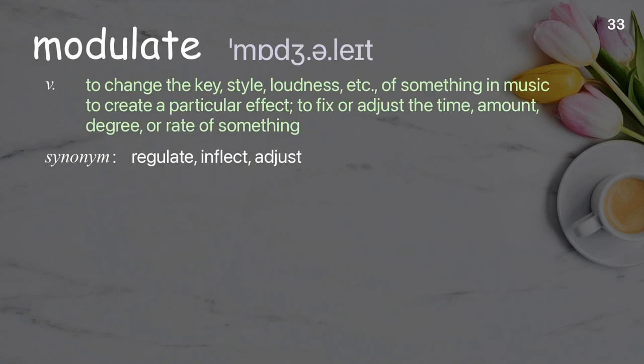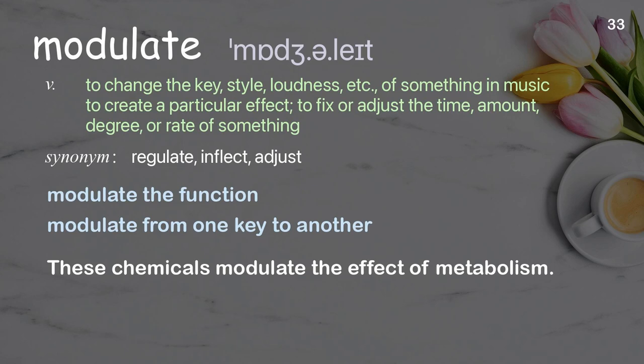Modulate: to change the key, style, loudness, etc. of something in music to create a particular effect; to fix or adjust the time, amount, degree, or rate of something. Examples: modulate the function; modulate from one key to another. These chemicals modulate the effect of metabolism.